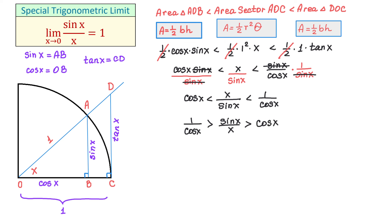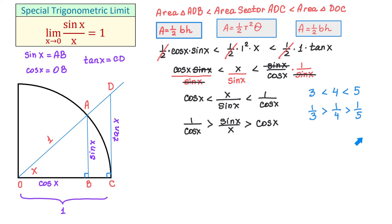To better visualize what we just did, imagine three numbers: 3, 4, and 5. You agree that 4 is greater than 3 but less than 5. If we take the reciprocal of each we get 1/3, 1/4, and 1/5. Now 1/3 is the largest and 1/5 is the smallest, so we need to reverse the inequality symbols: 1/3 is greater than 1/4 and 1/4 is greater than 1/5. Equivalently, 1/5 is less than 1/4 and 1/4 is less than 1/3.